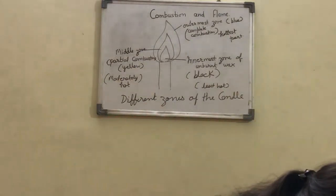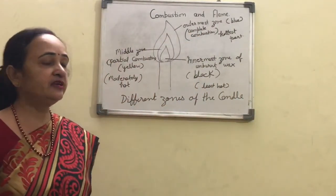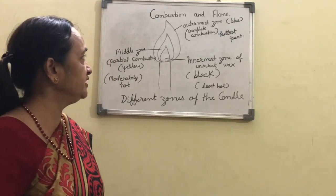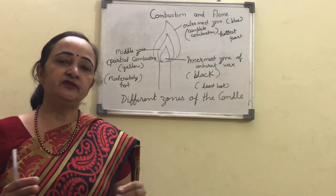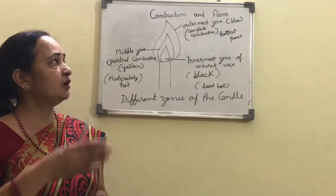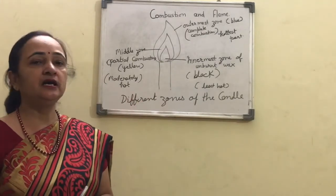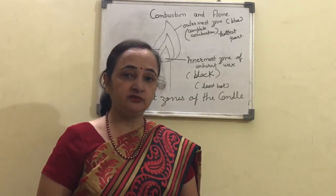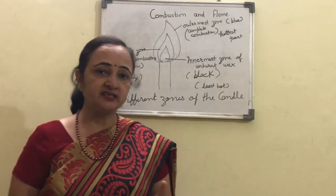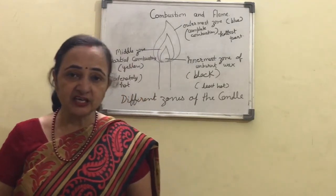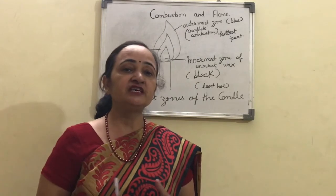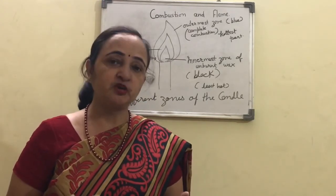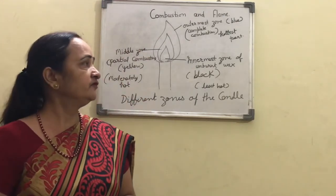Let's summarize what we studied today. First, we studied what is a flame and the color of the flame — three colors: the outermost is blue, the innermost is black, and in between there is yellow. Also, sometimes you might have observed a reddish color in your LPG gas at the end when the gas is going to finish. That reddish color is because of some impurities present in the LPG cylinder. Normally, the LPG flame is of blue color, and it is the hottest because complete combustion occurs there.